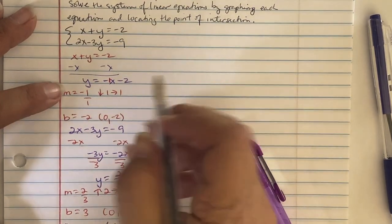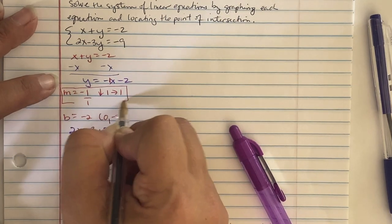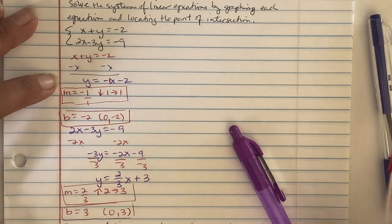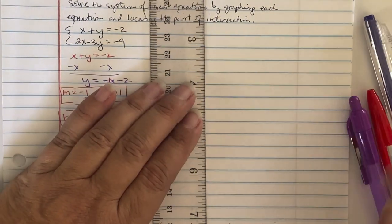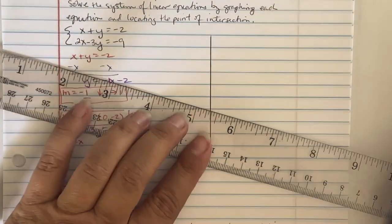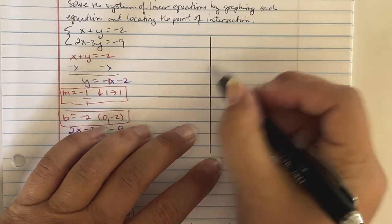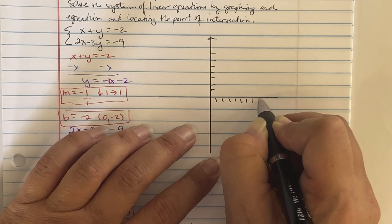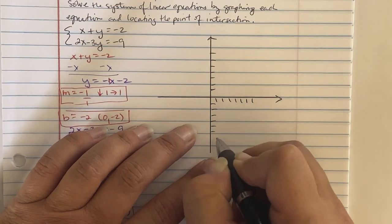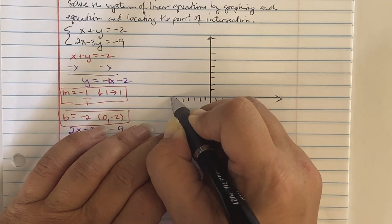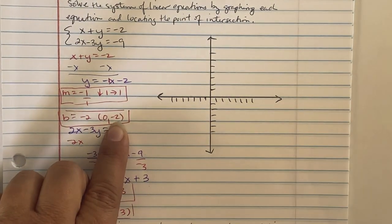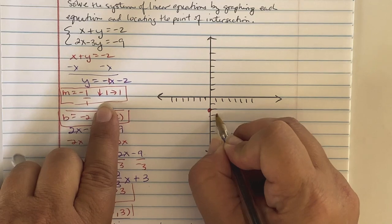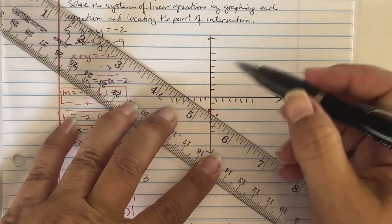Now we graph both lines. The first equation starts at (0, negative 2) on the y-axis, and the slope says go down one and right one — so place the first dot at negative 2, the second dot one unit down and one unit right, then sketch the line with arrows on both ends.